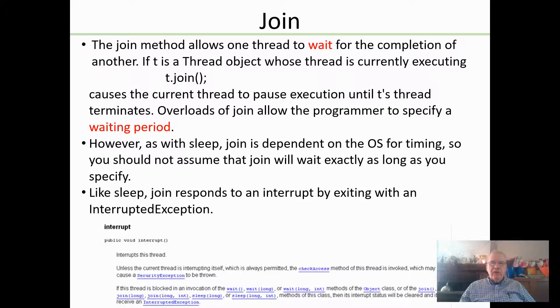The first thing we have to solve is satisfied by the join method. If t is a thread object whose thread is currently executing, t.join causes the current thread to pause until t's thread terminates. Join is dependent on the operating system for timing, so we should not assume that join will wait exactly as long as you specify. Join also responds to an interrupt by exiting with an InterruptedException. There are several overloaded versions of join, shown in the yellow highlight.